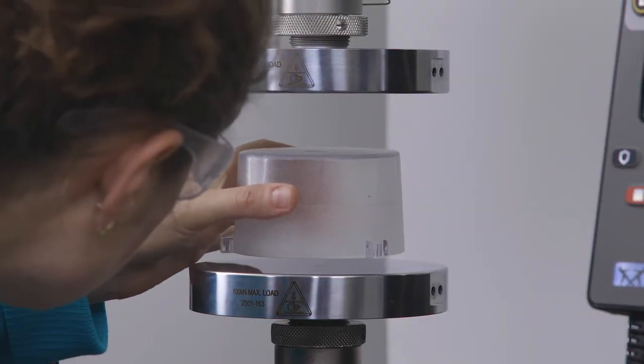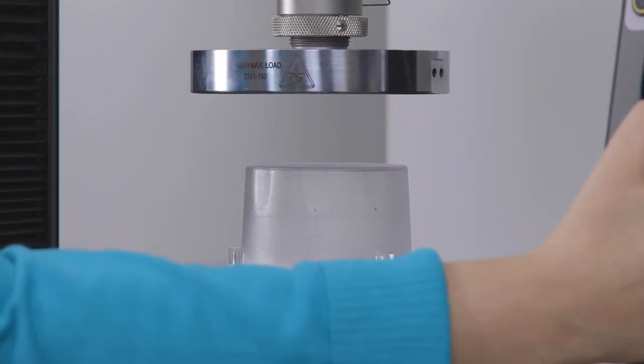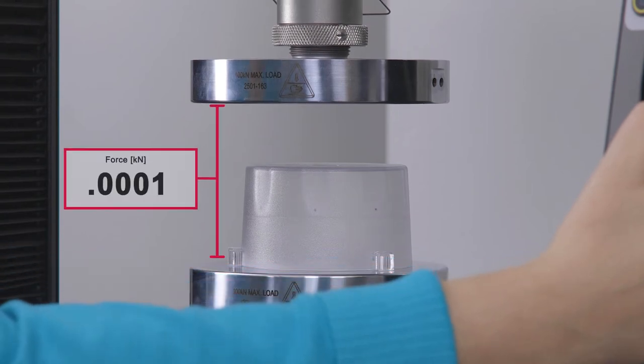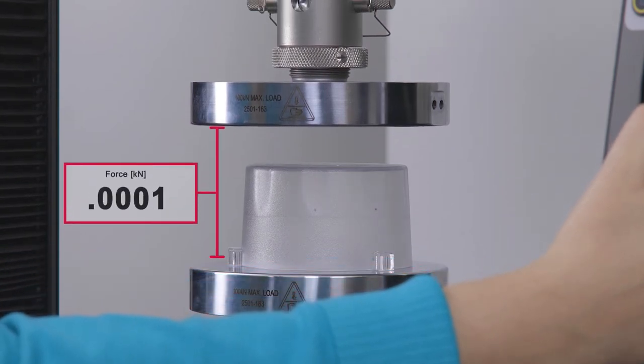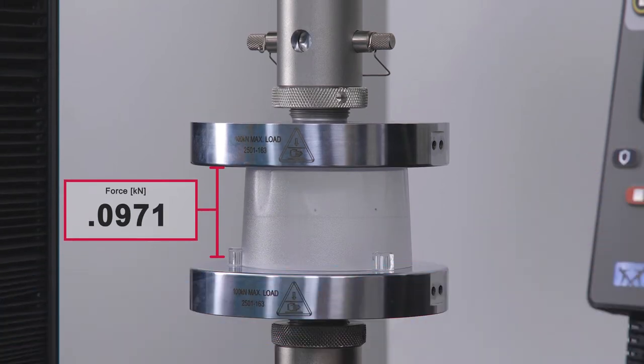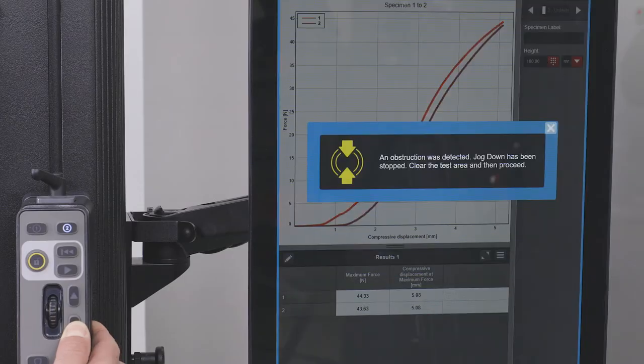Collision Mitigation runs in the background and requires no operator intervention. If the system detects an unexpected increase in force, it will release some of it by reversing the crosshead back to the displacement where the increased force was first detected.